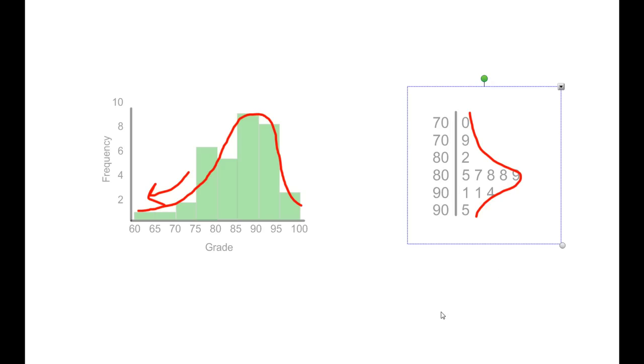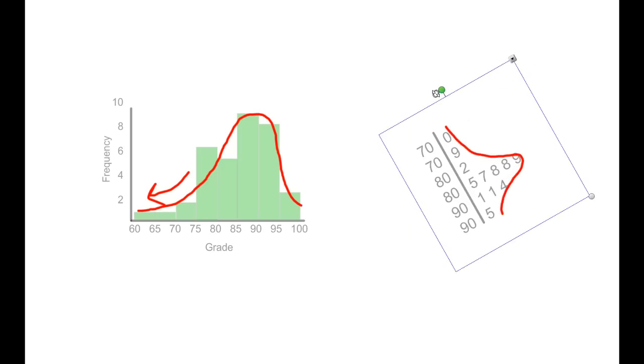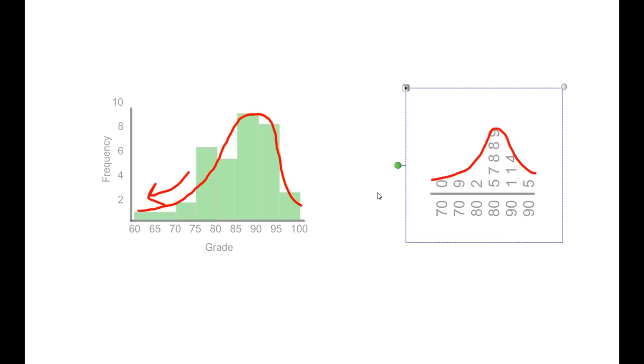This one here is tricky because it's sideways. So, what I would do is rotate your paper or whatever you have that you're working with so that the lower numbers are on the left, the higher numbers are on the right. Then, you can see that, just like the one before it, most of the data is over here, tail is here. So, this one is not quite as skewed, but I would say slightly skewed to the left.